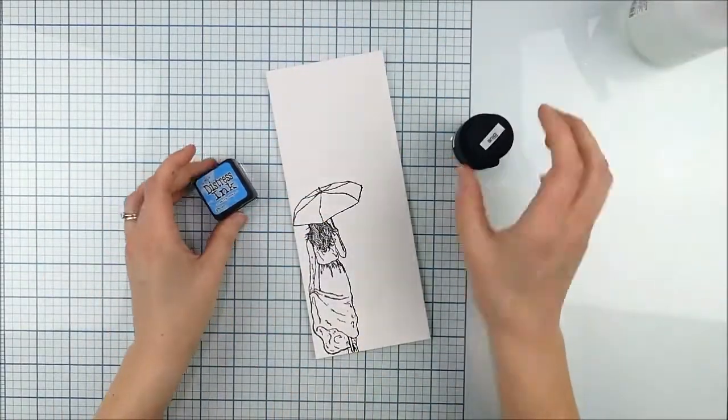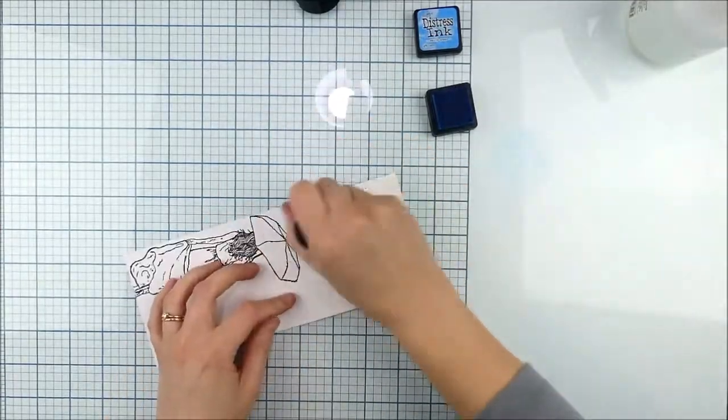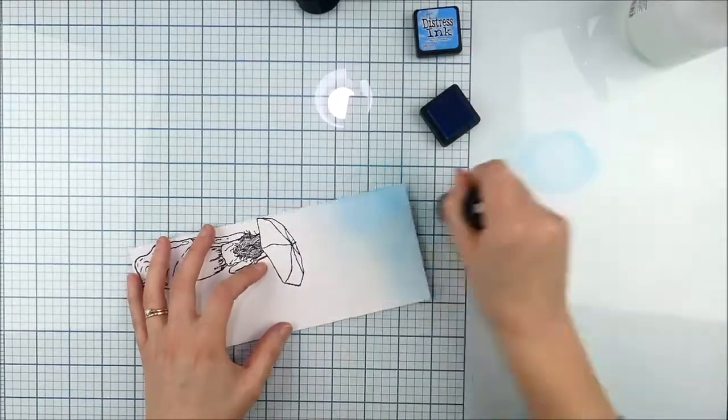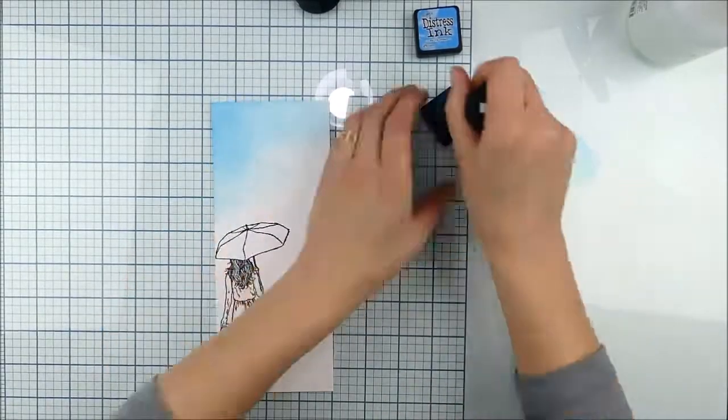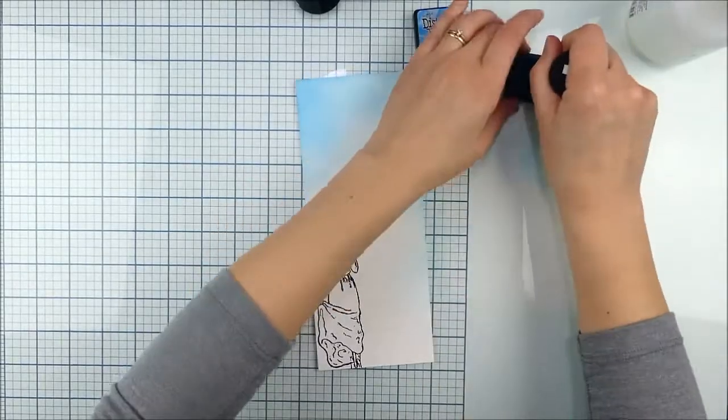Then I'm going to use some distress inks and some water. This is a great layering technique, perfect for when you just have time to let things dry between steps and just kind of work a little bit here and there. I'm using salty ocean distress ink and a blending brush just to kind of blend a soft edge on the outside.